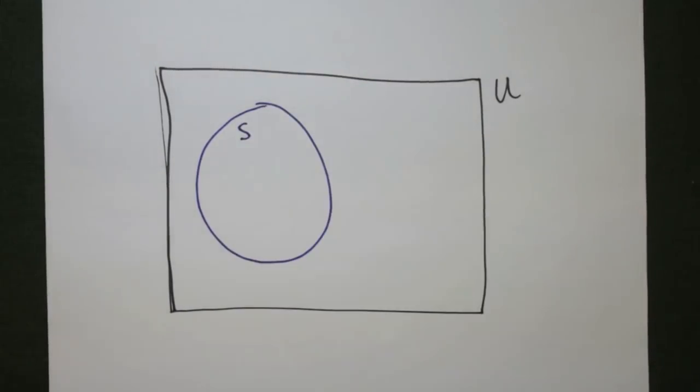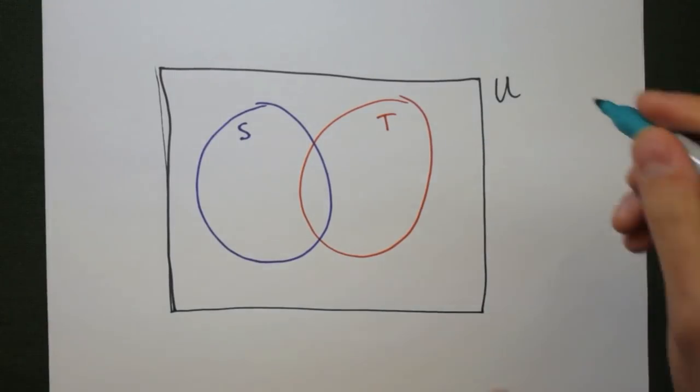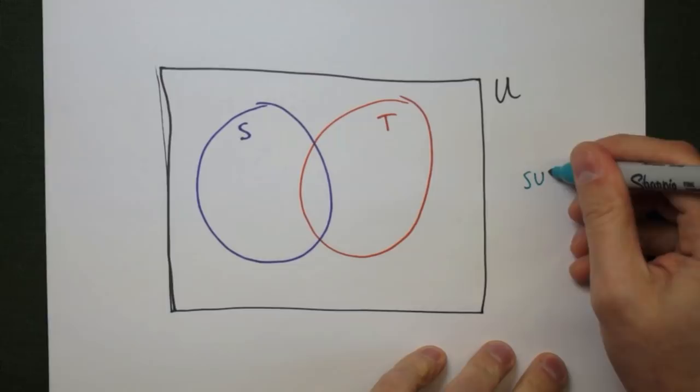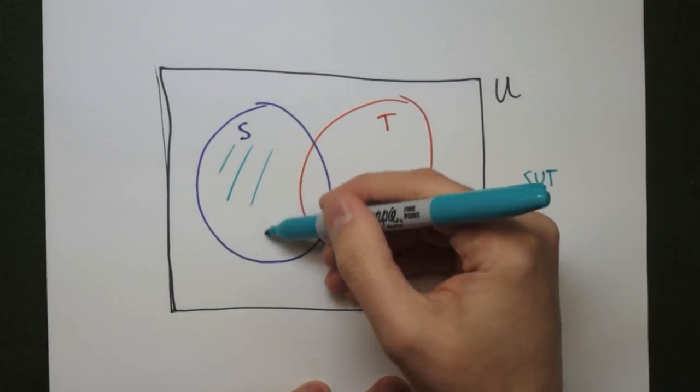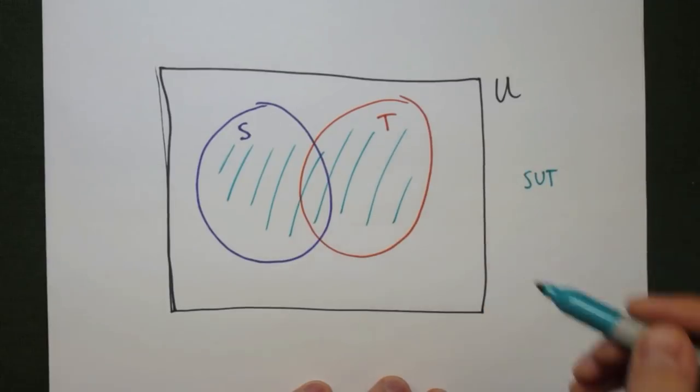So let's take a look at the Venn diagram that's associated with one of De Morgan's laws. We have S and T, and then S union T is going to be the parts inside the circles, all of S and all of T.